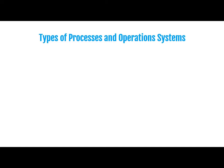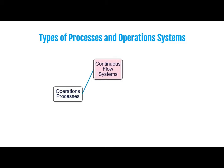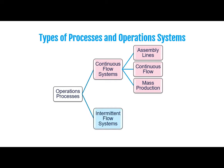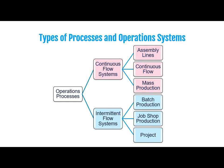Now we will try to understand the types of processes and operations systems. Operations processes are broadly classified into two categories: one is the continuous flow system, and the other is the intermittent flow system. The intermittent flow system can be further categorized into batch production, job shop production, and project. In the coming lecture, we will understand continuous flow system, intermittent flow system, and their categories in detail.